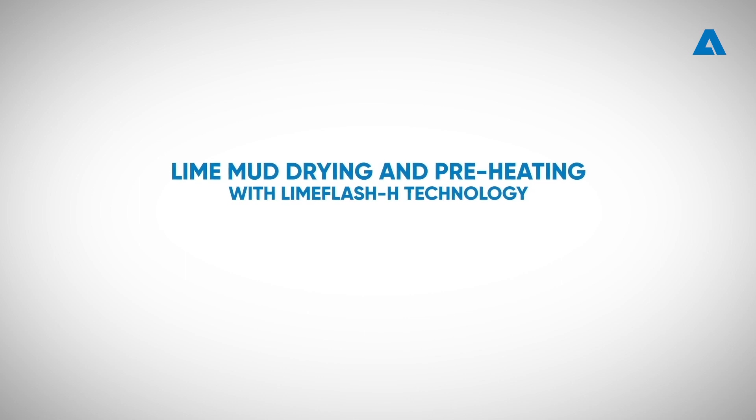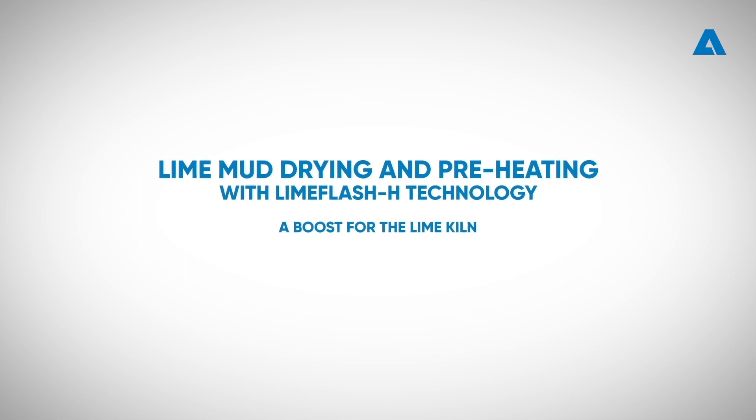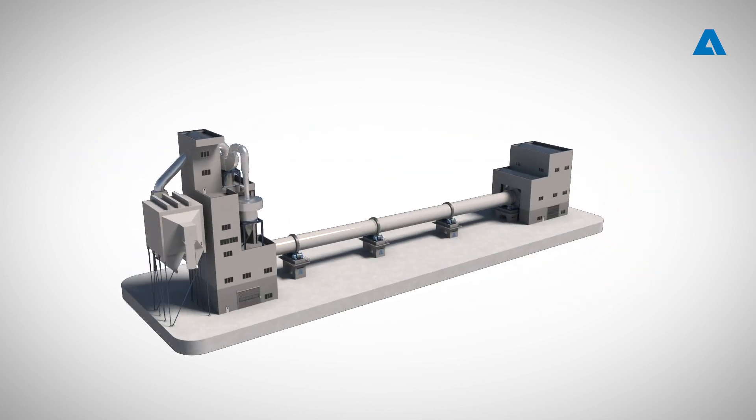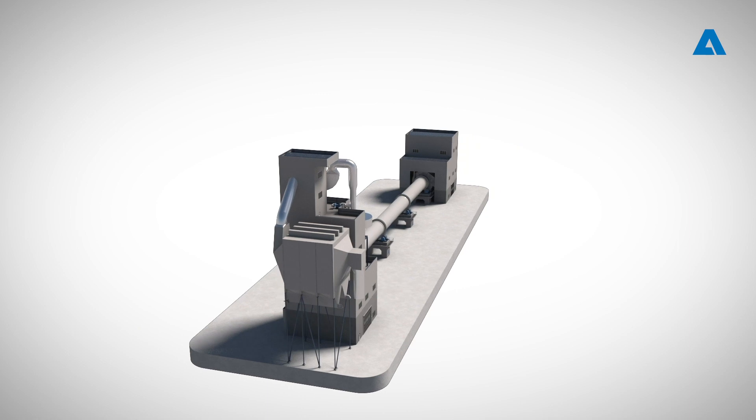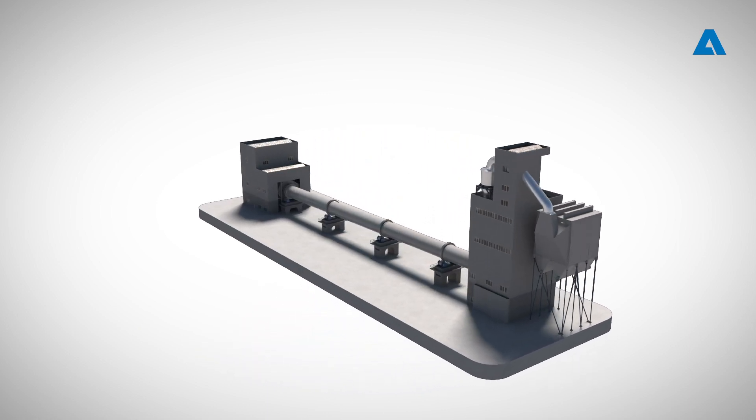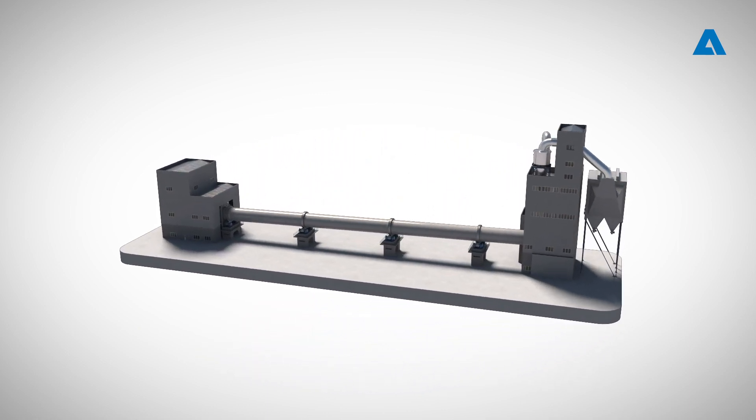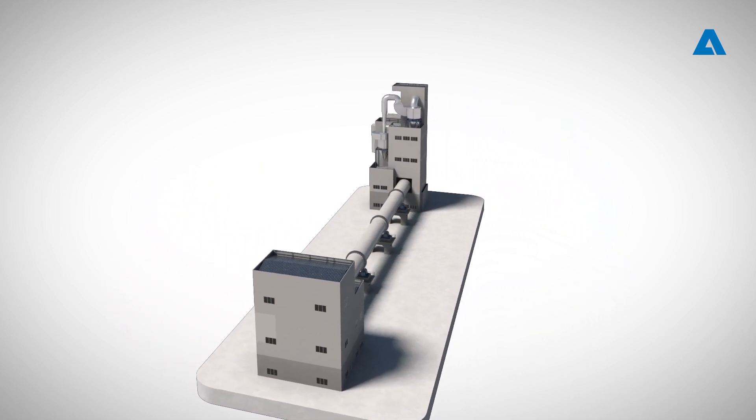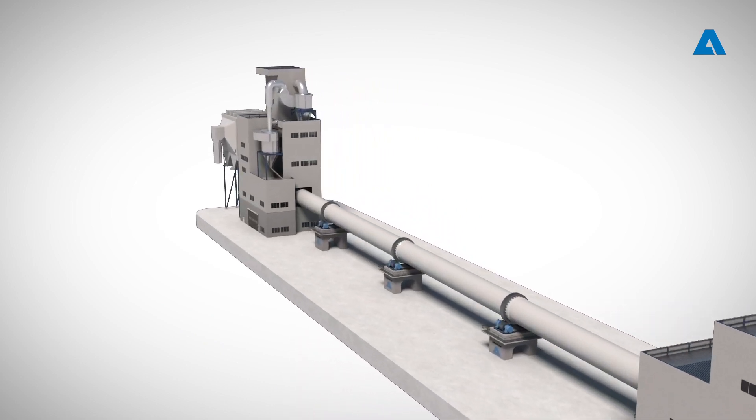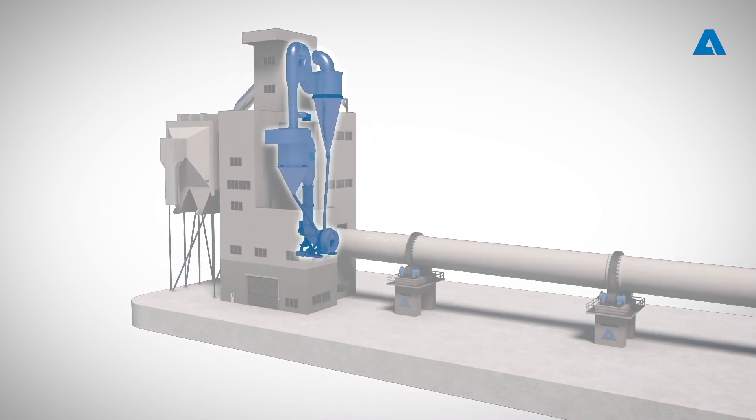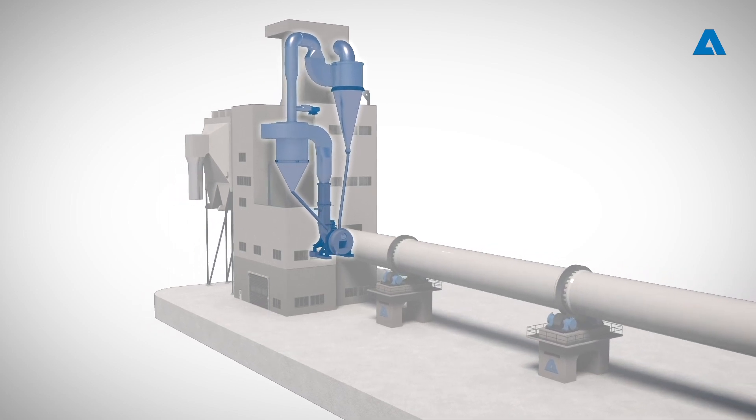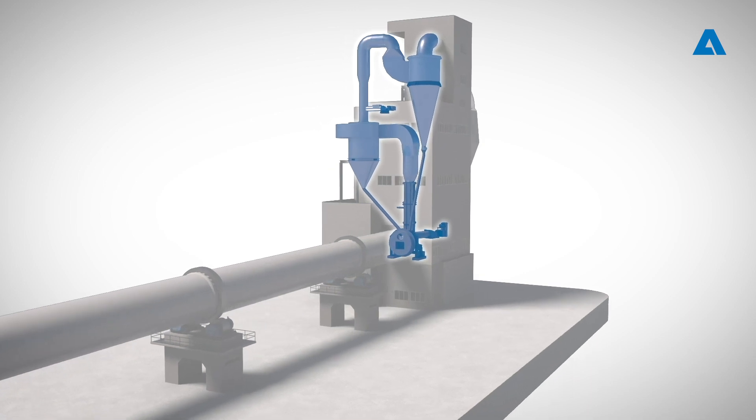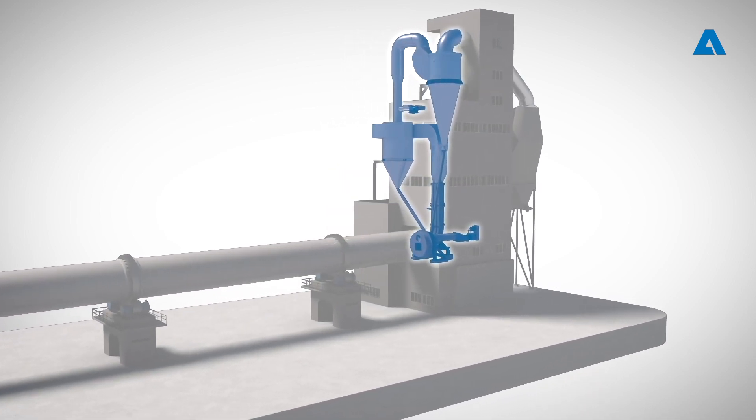Lime Mud Drying and Preheating with LimeFlash H Technology. The calcination process in the lime cycle is done with the rotating lime kiln, and efficiency of the lime kiln depends on the type of feed head technology used. Andritz has three types of feed head systems: LMD, LimeFlash, and now Andritz has invented the next generation LimeFlash H feed head. This LimeFlash H is a completely new feed end technology in the industry for maximizing efficiencies of the lime kiln, a boost for the lime kiln.